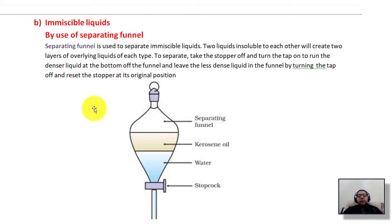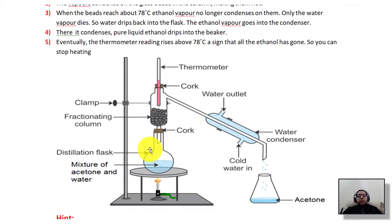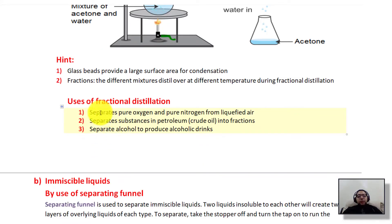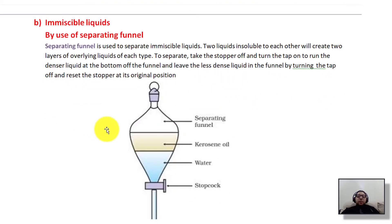In today's lesson we reviewed separation techniques for liquids. We spoke about separating miscible liquids using fractional distillation, where we boil the liquids at different temperatures — using an electrical heater is preferred as it allows better temperature control than a Bunsen burner. We discussed uses of fractional distillation: purifying oxygen and separating pure oxygen and nitrogen from liquid air, separating petroleum into its products, and separating alcohol to produce alcoholic drinks. We also covered separating immiscible liquids using a separating funnel.